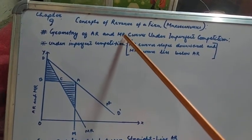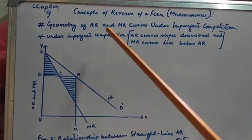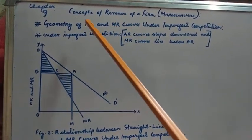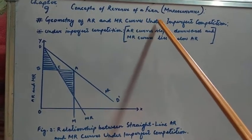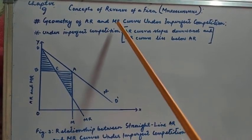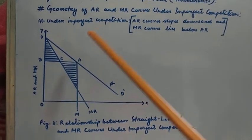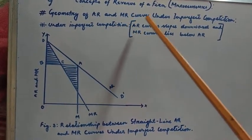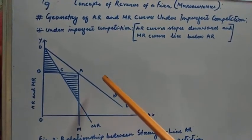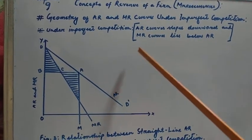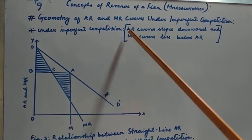Let us discuss the geometry of average revenue and marginal revenue curves under imperfect competition. We are discussing in detail the various concepts of revenue of a firm — that is, average revenue and marginal revenue. We have also discussed these under perfect competition. Under monopoly and various forms of imperfect competition, the average revenue curve slopes downward.